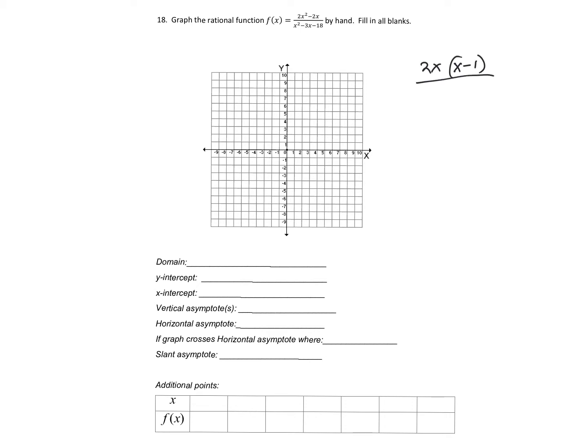And then the bottom, you can factor that. What you end up getting is x minus 6 and then x plus 3. If you want to go ahead and check that, if you FOIL the bottom, you should get x squared minus 3x minus 10.